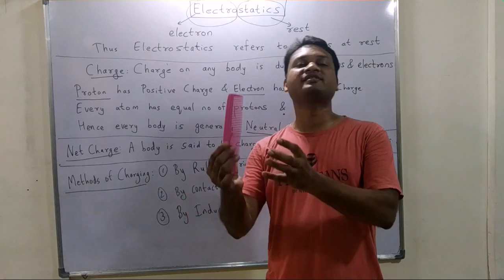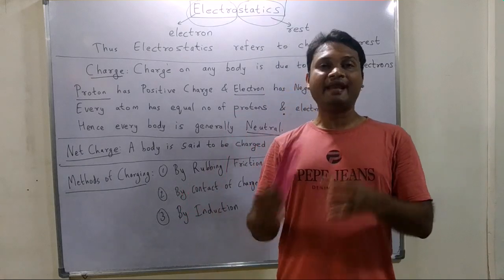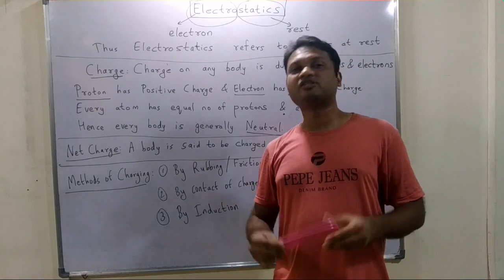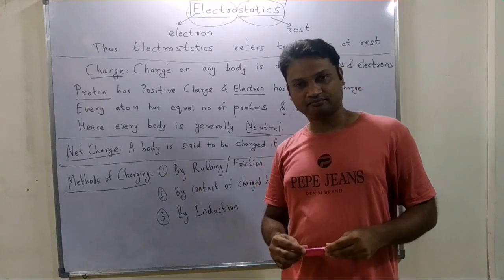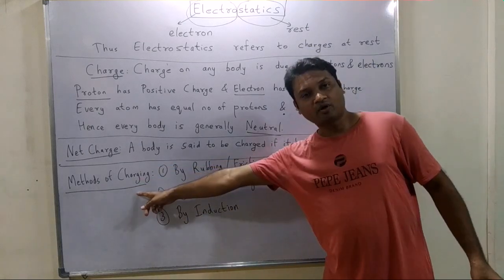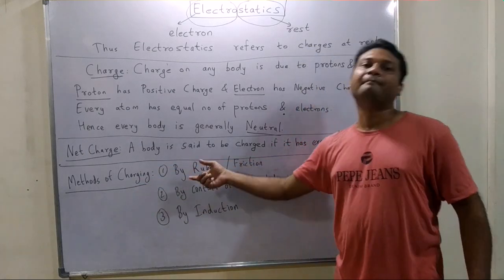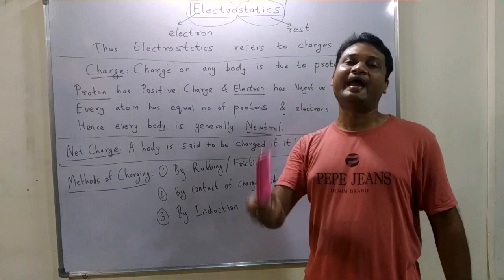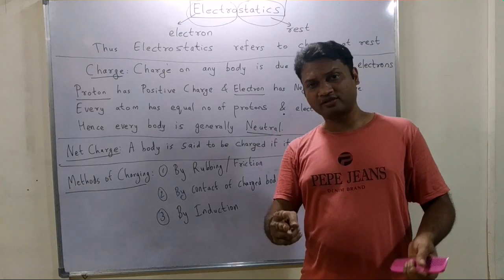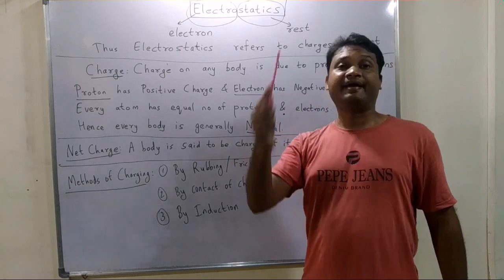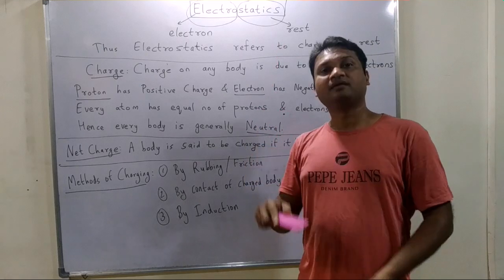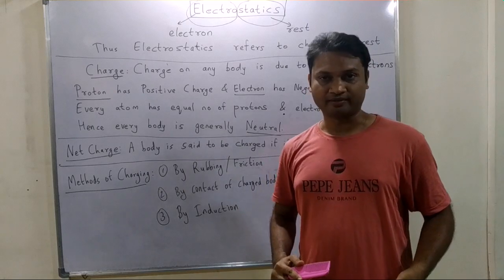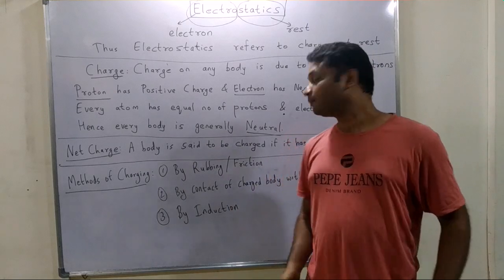When a body has an excess of electrons, it is negatively charged. When it has a lack of electrons, it is positively charged. This is the first method of charging a body — by rubbing or friction. Another example is using a scale rubbed on hair, after which bits of paper cling to the scale.